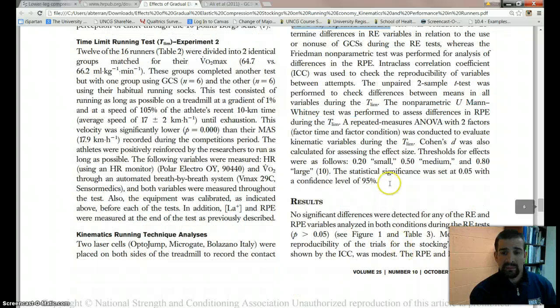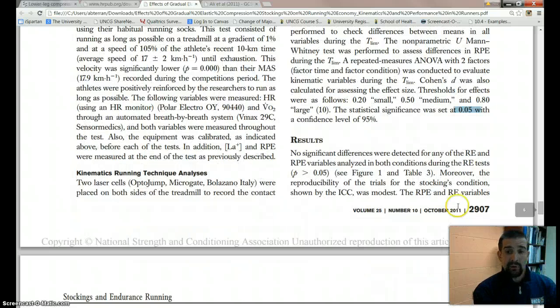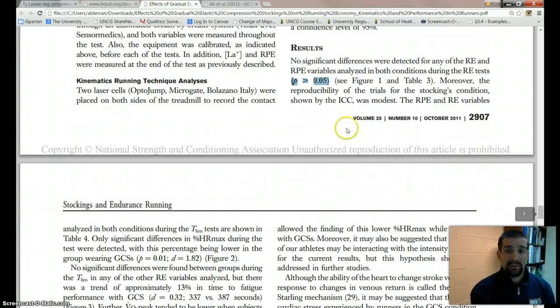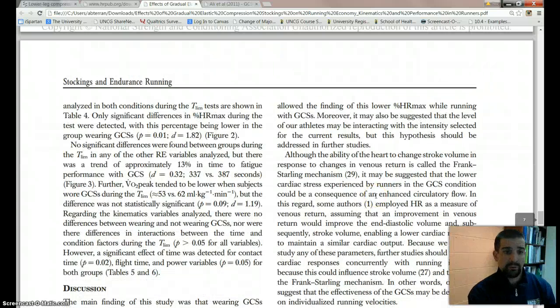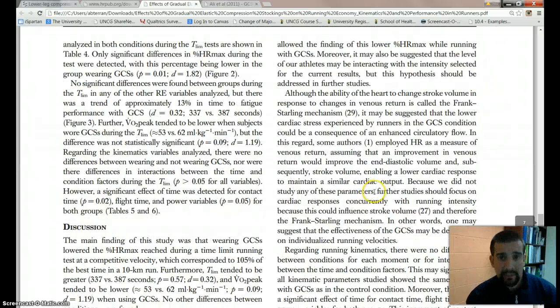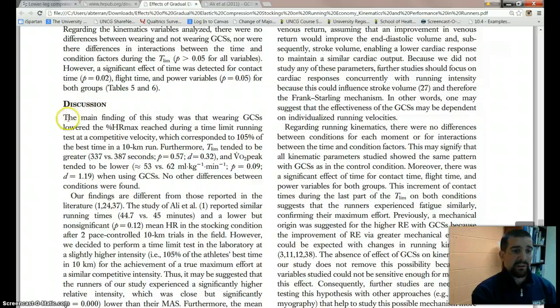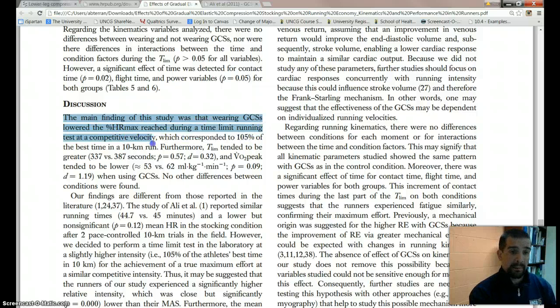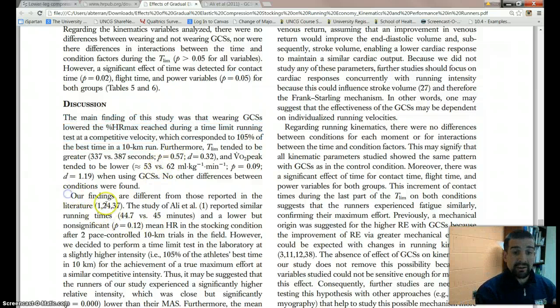You can see what they set their significance level at a 95% confidence interval in 0.05. And as you go for results, there's your P value. You can see all this kind of stuff is already included in here, but if you want to skip to the end, you just want to read the discussion. The main findings was that wearing compression stockings lowered percent heart rate max during time trial running at a competitive level. So basically this did help. The compression stockings did help.